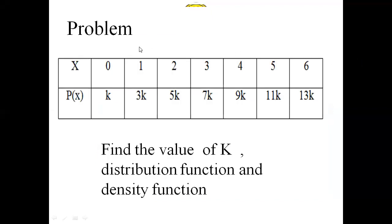We are taking the problem as: a table is given where X, the random variable, has events 0, 1, 2, 3, 4, 5, 6 and the corresponding probabilities are given as K, 3K, 5K, 7K, 9K, 11K, and 13K. Find the value of K, the distribution function, and the density function.